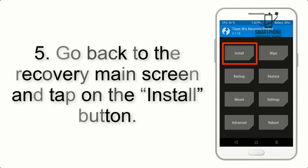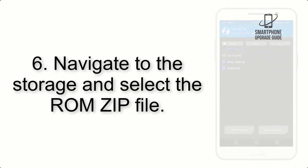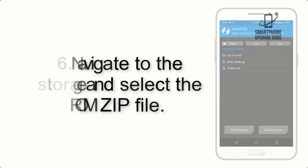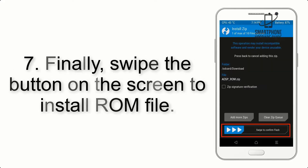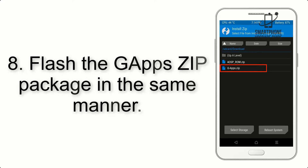Step 5: Go back to the recovery main screen and tap on the Install button. Step 6: Navigate to the storage and select the ROM zip file. Step 7: Finally, swipe the button on the screen to install the ROM file.